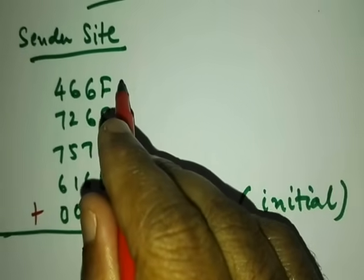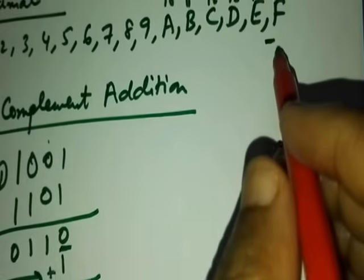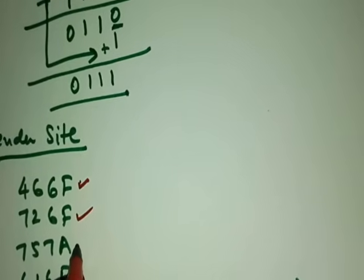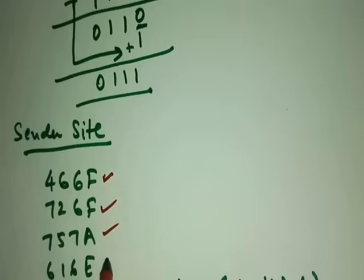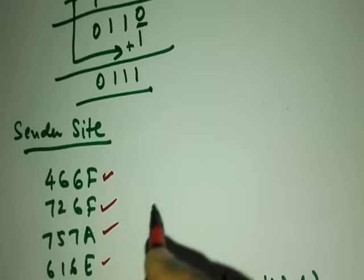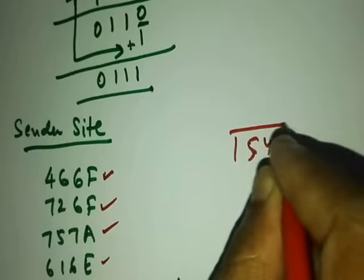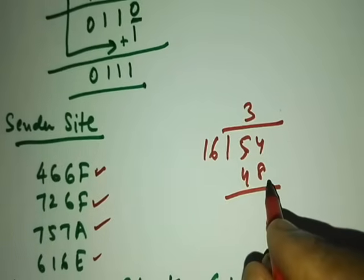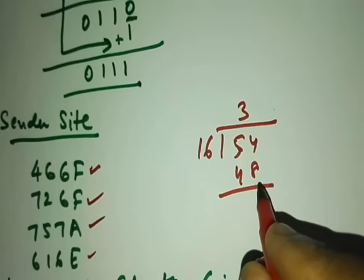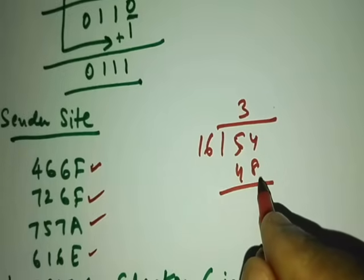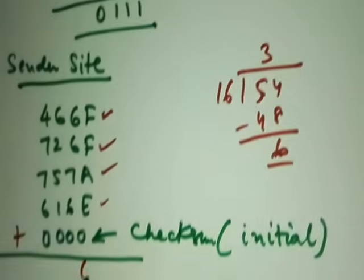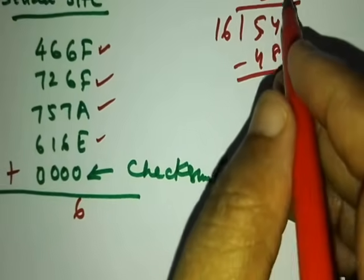For the first column: f means 15. So 15 plus 15 is 30, 30 plus a means 10, that is 40, 40 plus 14 is 54. So 54 divided by 16 gives 3 with a remainder of 6. You put the 6 down and the 3 becomes the carry.